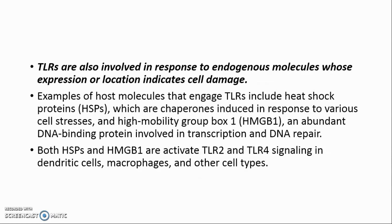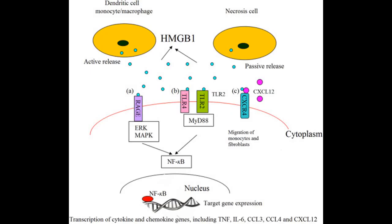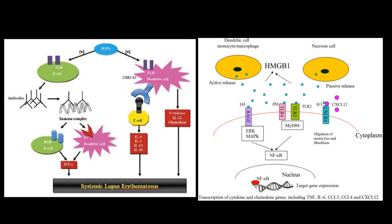TLRs are also involved in response to endogenous molecules whose expression or location indicates cell damage. Examples of host molecules that engage TLRs include heat shock proteins (HSPs), which are chaperones induced in response to various cell stresses, and high mobility group box 1 (HMGB1), an abundant DNA binding protein involved in transcription and DNA repair. Both HSPs and HMGB1 activate TLR2 and TLR4 signaling in dendritic cells, macrophages, and other cell types.